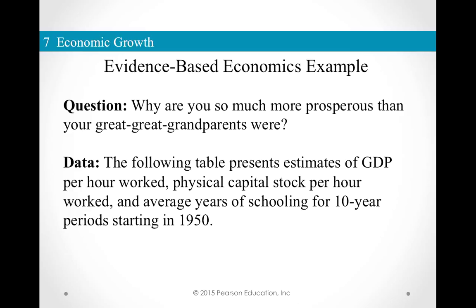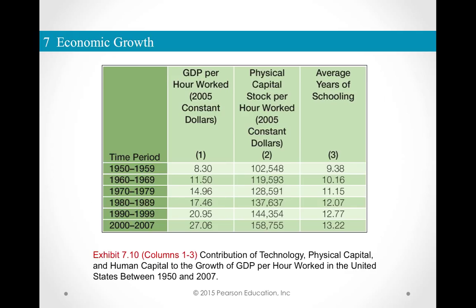We know that there are three sources of economic growth: accumulation of physical capital, accumulation of human capital, and technology. Let's look at data on these three variables starting in 1950. This is for the United States — we are looking at the contribution of technology, physical capital, and human capital to the growth of GDP per hour worked between 1950 and 2007.